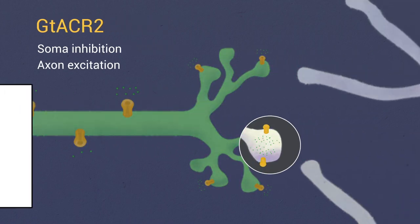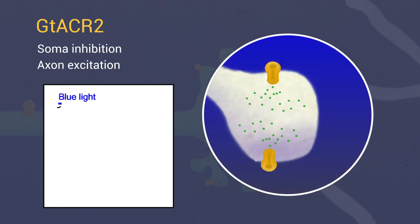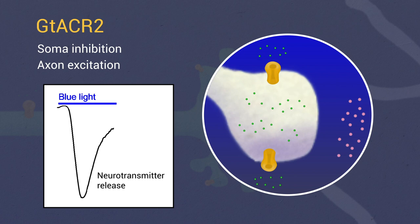Indeed, we show that GT-ACR2 activation in the axon and presynaptic terminals directly depolarizes the membrane to induce neurotransmitter release due to high chloride concentrations in these compartments.